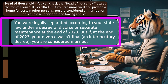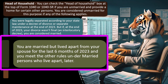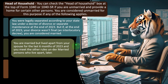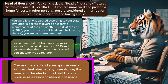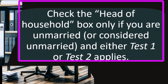If your divorce wasn't final — only an interlocutory decree — you are considered married. You may also be considered unmarried if you are married but lived apart from your spouse for the last six months of 2023 and meet the other rules under married persons who lived apart. Additionally, if you are married and your spouse was a non-resident alien at any time during the year and the election to treat them as a resident alien is not made, you may qualify as head of household.